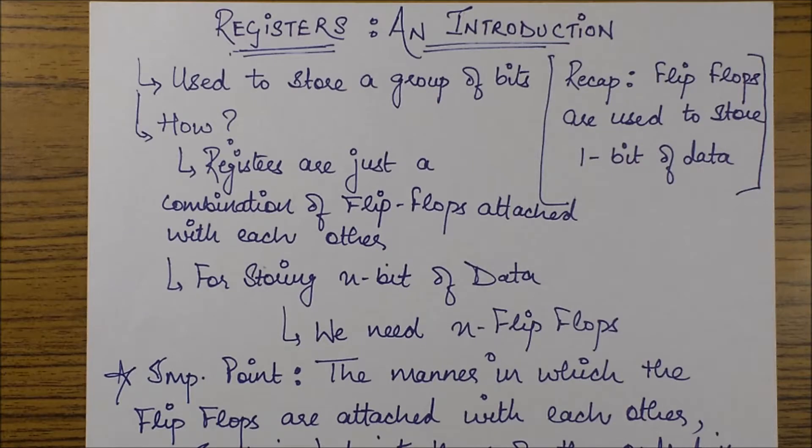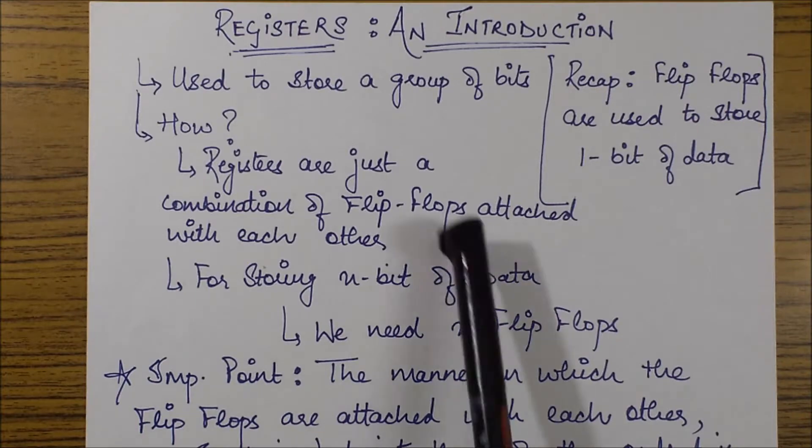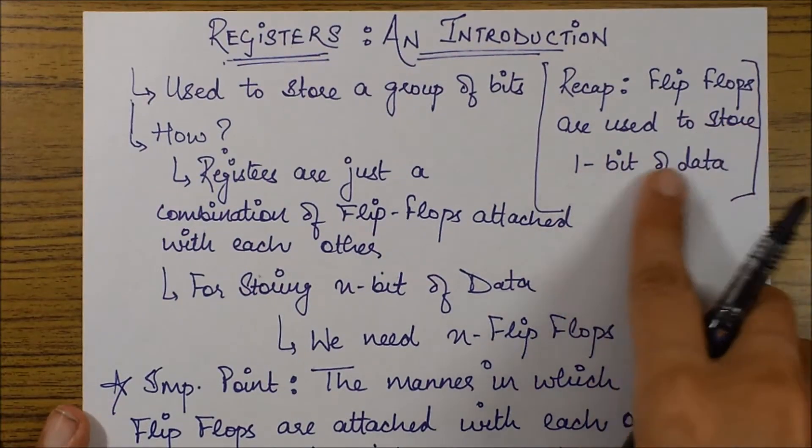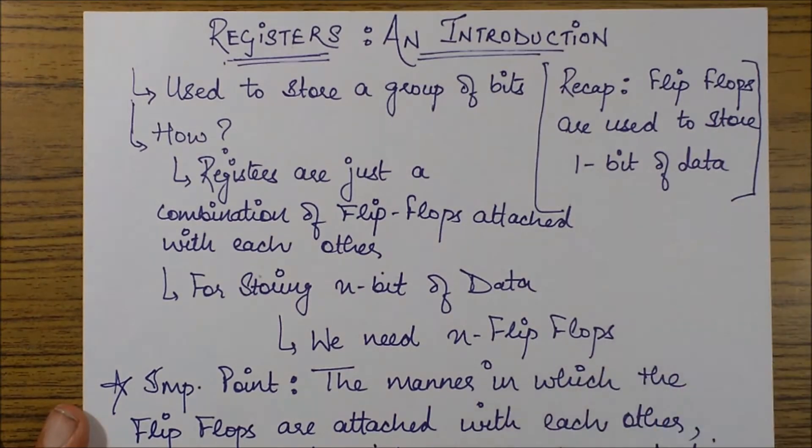We are going to discuss the concept of memory registers and how they help in storing data. The first and major use of registers is to store a group of data bits. If I want to give an analogy of a register, I can assume it in the form of a collection of pages. We also know that flip-flops are used to store one bit of data.